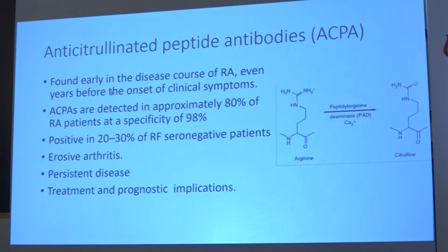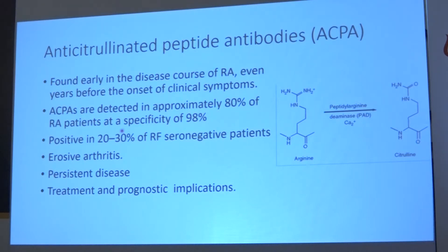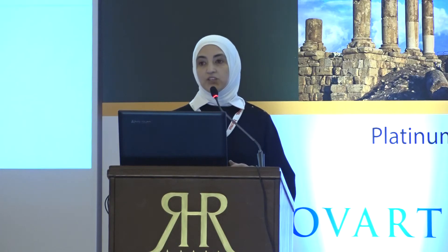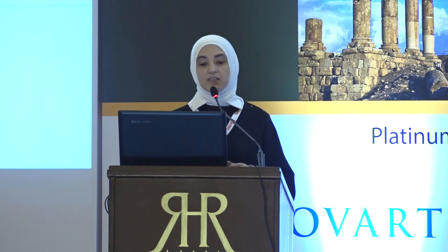ACPA sensitivity is equivalent to rheumatoid factor — present in around 70 to 80% of patients. But the key advantage is their specificity, which is 98% specific for rheumatoid arthritis. They can also be present in 20 to 30% of RF-negative patients. Importantly, ACPA antibodies denote erosive arthritis, a more aggressive and persistent disease, and they have significant treatment implications.